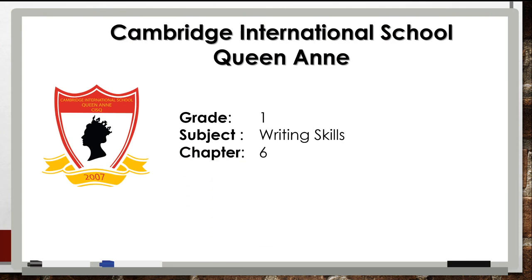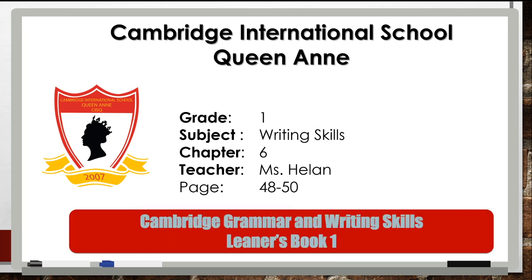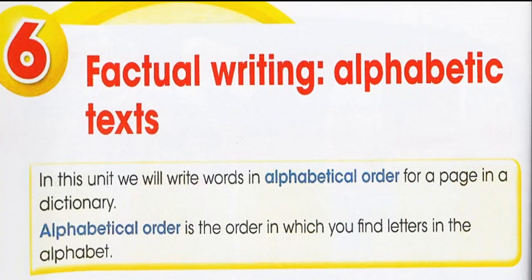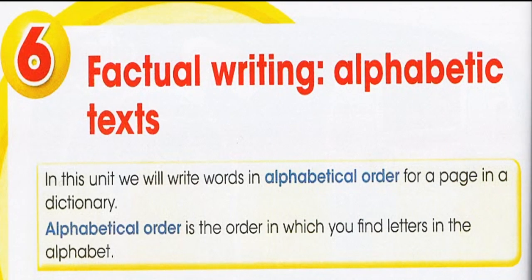Today we have writing skill and we will be looking at chapter 6. With Ms. Helan, the pages that we cover are pages 48, 49 and 50. Please open your Cambridge Grammar and Writing Skills Learner's Book 1, page 48. It's unit 6, factual writing, alphabetic texts.